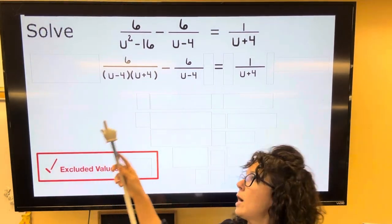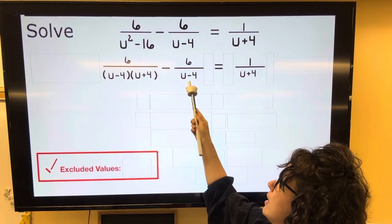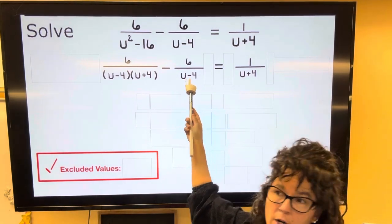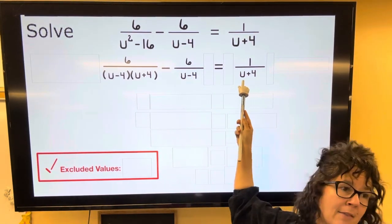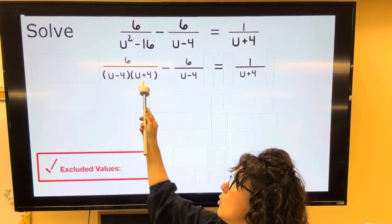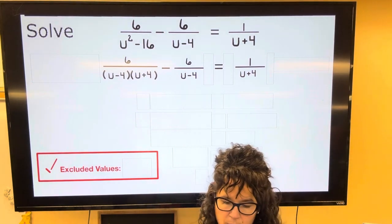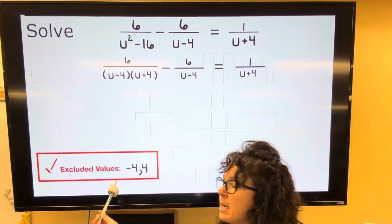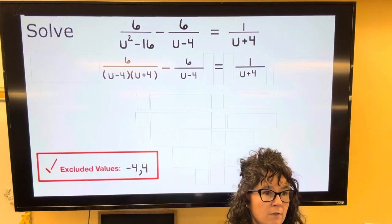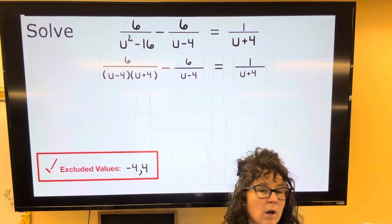Okay, so now let's go ahead and just identify any excluded values. The number that would make that denominator equal 0 would be 4. The number that would make that denominator equal 0 would be negative 4. And both 4 and negative 4 would make that denominator equal 0. So I'm just going to remind myself before I even get started that if I solve this and end up getting negative 4 or 4, I want to throw it out.